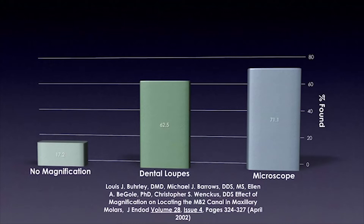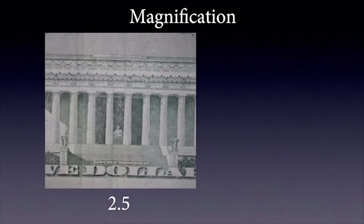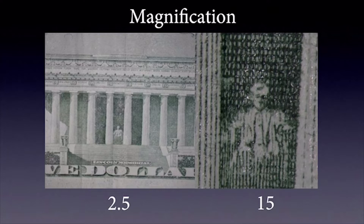This is the back of a $5 bill showing the Lincoln Memorial at 2.5 times magnification, which is pretty typical for loupes. This is at approximately 15 times magnification using my microscope — a pretty significant difference in magnification and something we should all consider when delving into endodontics.